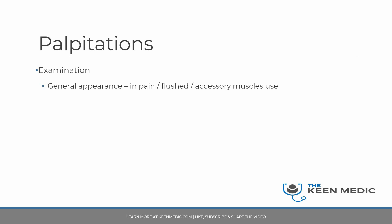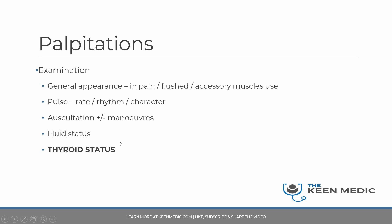For the examination in palpitations: look at general appearance, assess the pulse — rate, rhythm, and character — auscultate with or without maneuvers, and assess fluid status again to look for evidence of acute heart failure. If they've got acute heart failure in the context of palpitations, that is basically an emergency as systolic function is likely compromised. Critically, the thing most often missed is the thyroid status — you need to do a full thyroid status examination, covering everything from the hands to goitre, swallowing, and sweating.